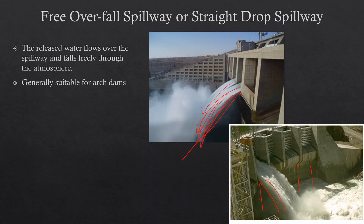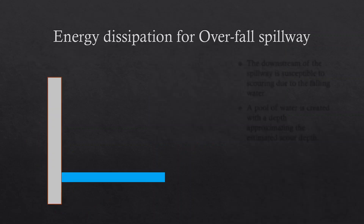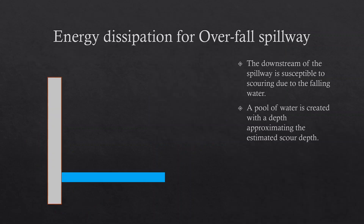One problem with allowing water to fall directly to the downstream is that it falls with very high velocity, and therefore it may cause erosion at the downstream where it falls. We can calculate using some empirical equations what the maximum scour depth could be, based on the falling height of water.